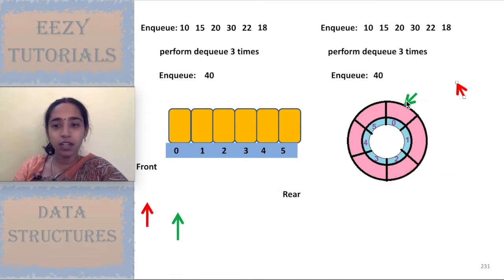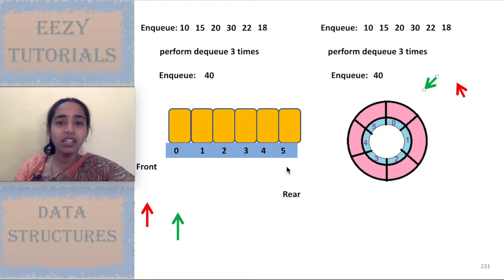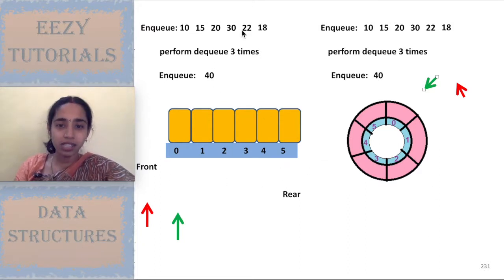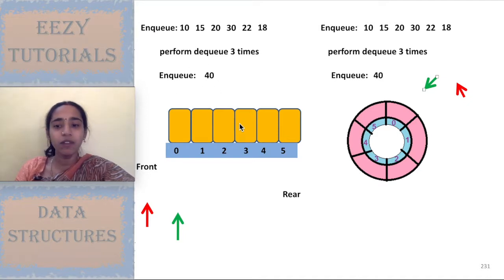My task is to enqueue 10, 15, 20, 30, 22, and 18. I am taking both a linear queue and a circular queue, each with a size of 6. I will perform the same task in both: enqueue six elements, then dequeue three times, then try to enqueue one more element — and observe what happens in each case.